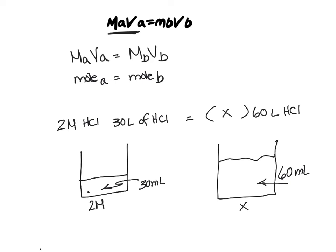All we have to do is take 2 times 30. That's the molarity of my sample A times the volume of sample A, which is the 30, equals x times 60. And so we've got 60 equals 60x, x equals 1 molar.